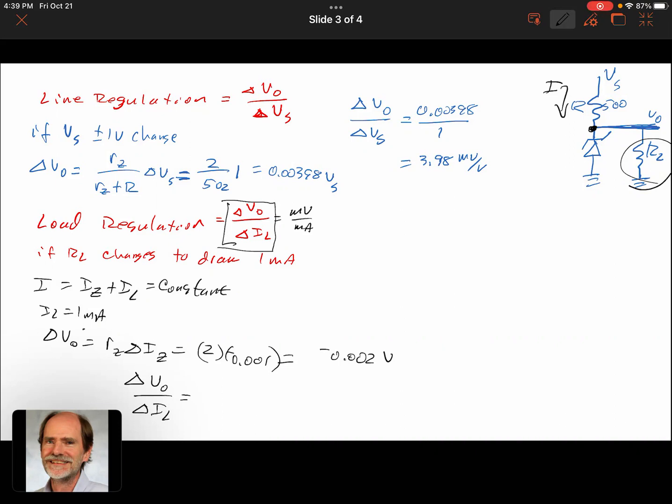So we've got a delta Vout over delta Il, right? The load current changed by 1 milliamp, and our units are now volts over amps, or volts per milliamp, or millivolts per milliamp. So we've got a 2 millivolt change. We've got 2 millivolts for a 1 milliamp change, so we've got negative 2 millivolts per milliamp load regulation. That's really how both of those would work.